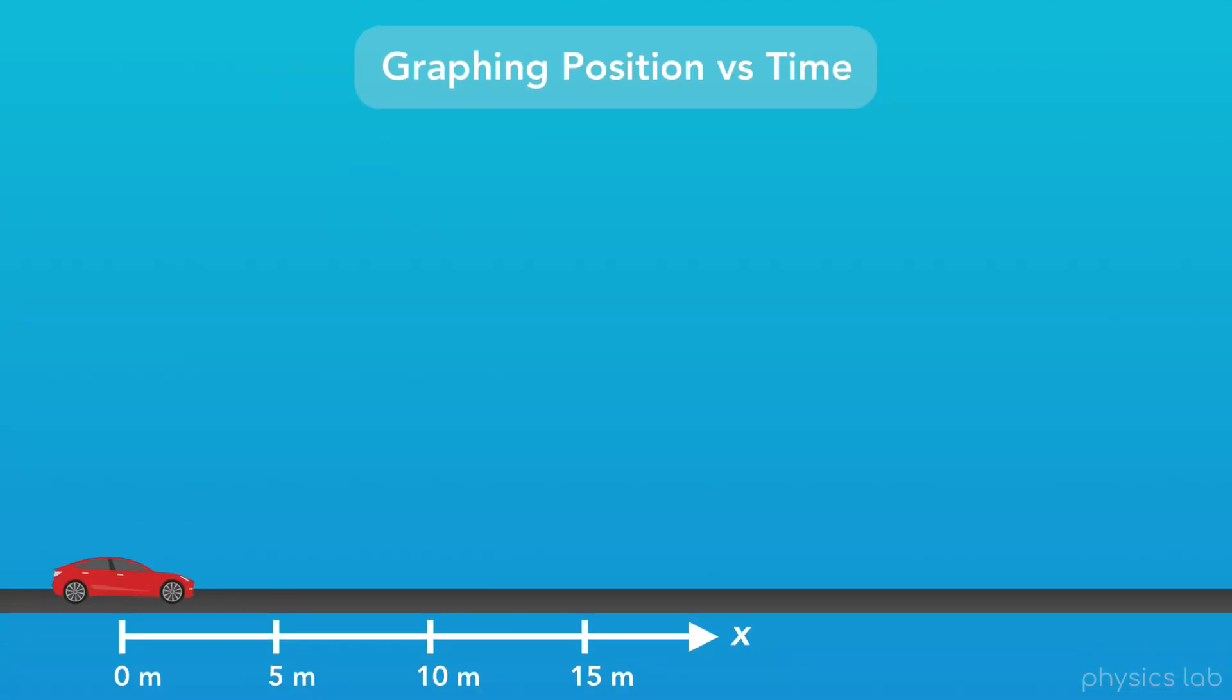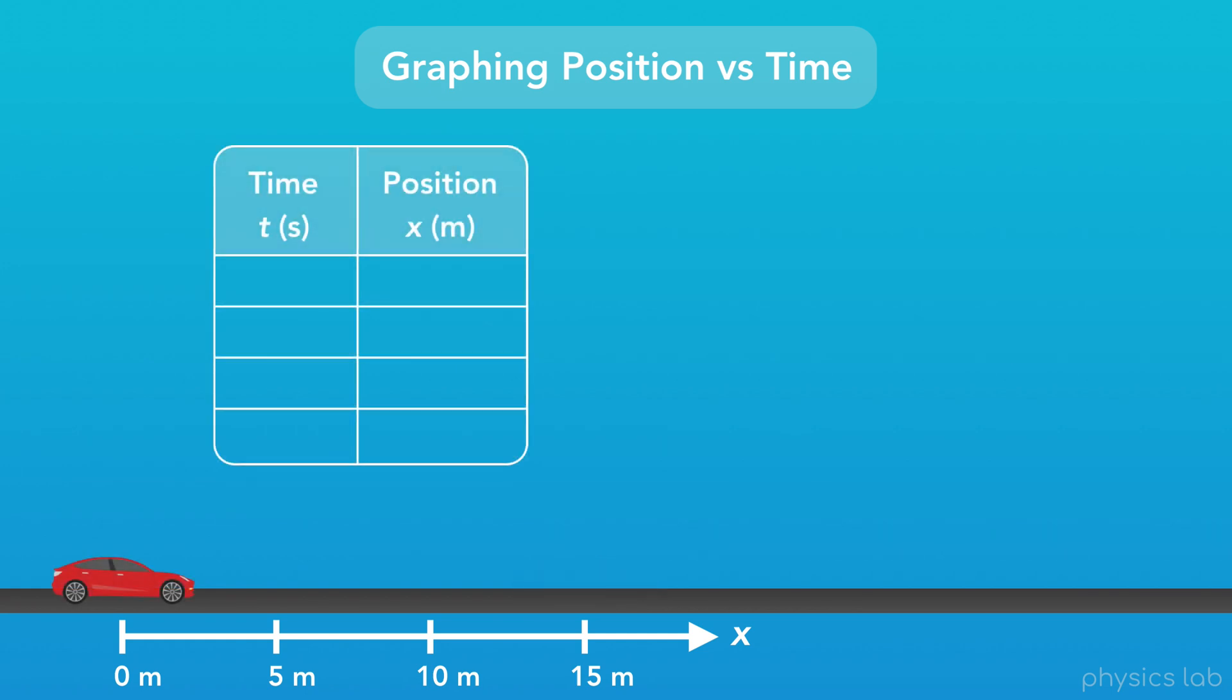Let's take a look at how we could graph the position of this car over time as it moves. To do that, we'll start by listing the position of the car at different points in time, as if someone was standing on the side of the road with a stopwatch, and recording the position of the car at different times.